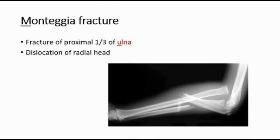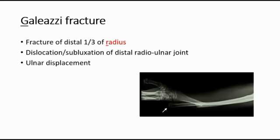Monteggia fracture is a fracture of the proximal one-third of the ulna together with dislocation of the radial head, as we can see over here. Whereas for Galeazzi fracture, it happens more distally and it is a fracture of the distal one-third of the radius, with dislocation or subluxation of the distal radial ulna joint, pointed by this white arrow over here.